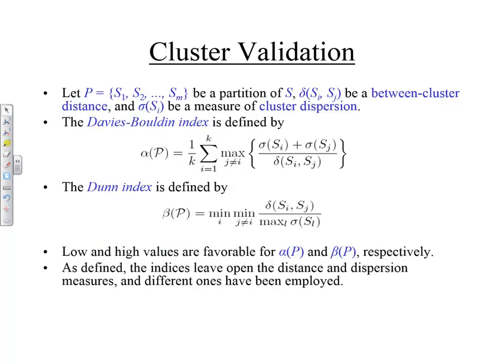There were two indices you could use. One of them is called the Davies-Bouldin index. The idea is that if your algorithm has done a good clustering job, the clusters should be widely separated and also tight. So sigma should typically be small and delta — the distance between different clusters — should be large. So having alpha small is a good thing; a low value of alpha is desirable.